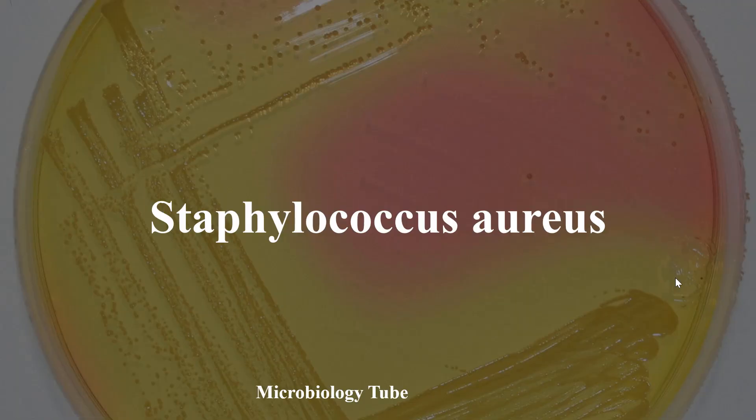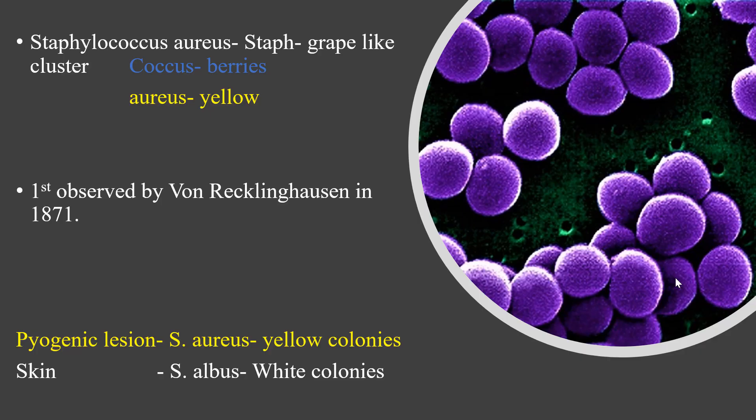Welcome to the next episode of the Microbiology Tube. Today we'll be talking about Staphylococcus aureus, which is a pathogenic bacteria mainly found in pus. Whenever a person has a wound infection, the majority of the bacteria isolated is Staphylococcus aureus. There is a rising concern because Staphylococcus is becoming more and more resistant. Methicillin-resistant Staphylococcus has already emerged, and now there is the emergence of vancomycin-resistant Staphylococcus aureus, making these infections very difficult to treat.